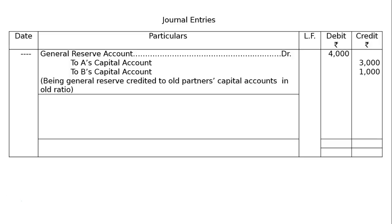General reserve account debited 4,000 — to A's capital account 3,000 and to B's capital account 1,000. Being general reserve credited to old partners' capital accounts in old ratio. General reserve is appearing in the books on the liability side of the balance sheet. At the time of admission, it should be distributed among old partners in old ratio.